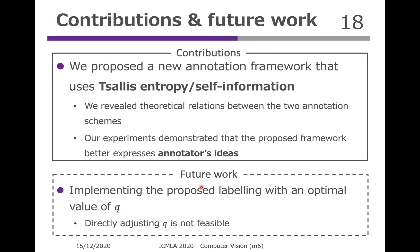Finally, we summarized the contributions and introduced a short discussion for future work. In this study, we proposed a new annotation framework using Tsallis entropy and Tsallis self-information. We discovered the theoretical relations between annotation schemes, and demonstrated that the proposed framework better expresses annotators' ideas. One important future work is implementing the proposed labeling with an optimal value of Q. However, this task may be very challenging because it is difficult to be explicitly aware of or manipulate each annotator's Q, not only for others but for annotators themselves. Thank you very much for watching.